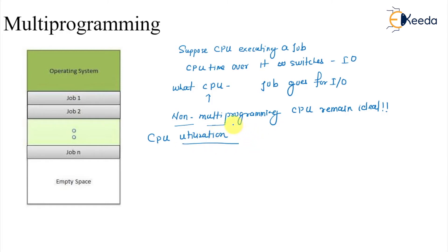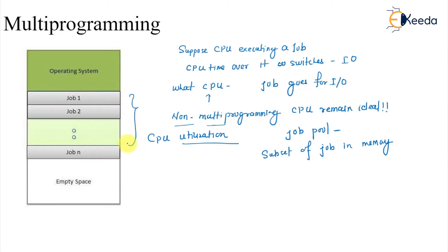Because the CPU is a resource and we want to keep it busy all the time. With multi-programming, there is a job pool. Since we cannot put all the jobs in the main memory, we take a subset of jobs in memory. Think of yourself as a user — we don't run a single program. We are running multiple programs simultaneously: browsing, a word processor, maybe listening to music.